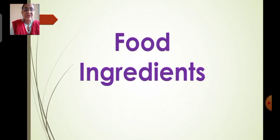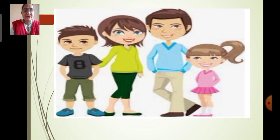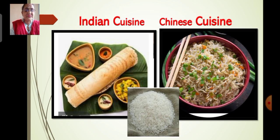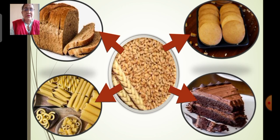Today we will study about the next topic: food ingredients. Here is a boy Ravi who went to a restaurant and checked the menu for Indian and Chinese cuisine. He reads the ingredients for dosa and fried rice. He notices the two dishes are very different but both have rice as the main ingredient. Here, wheat is shown and it is used to make a variety of food items such as pasta, bread, cake, biscuits and pies.